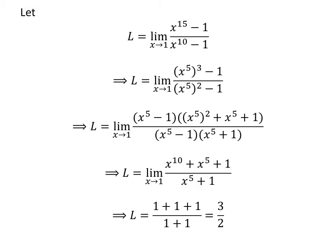As the right-hand side function is a continuous function at point 1, we can plug in 1 for x. This leads us to L is equal to 3 upon 2.